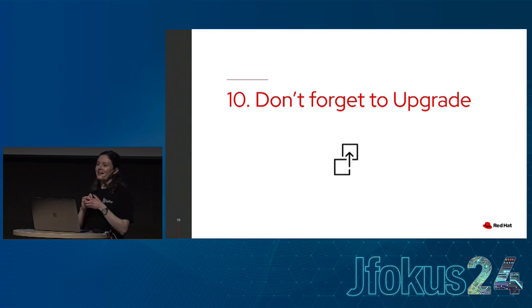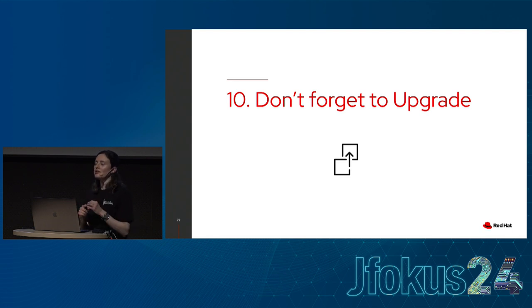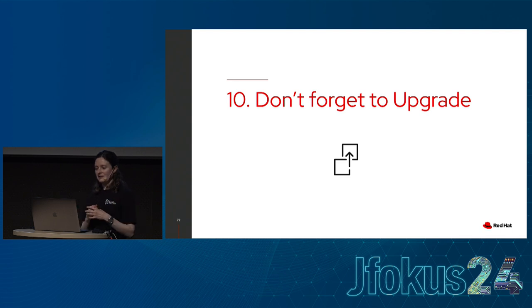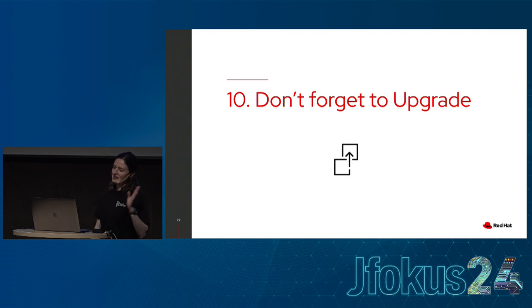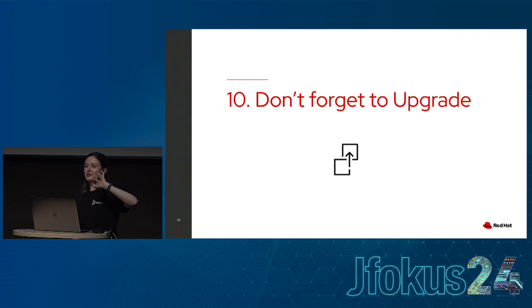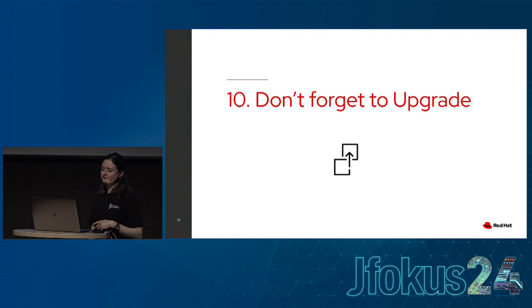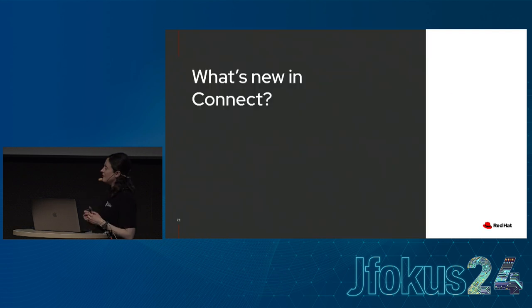The final tip is: don't forget to upgrade. Kafka Connect is moving really fast and always adding new things, so make sure you're on the latest version of the runtime to get the best features. Also make sure you're updating all your plugins — while the Kafka Connect API provides a lot of backwards compatibility, ideally you want to be running the latest version of everything. Strimzi has a great feature where, using connector Kubernetes resources, you can see the versions you're running.